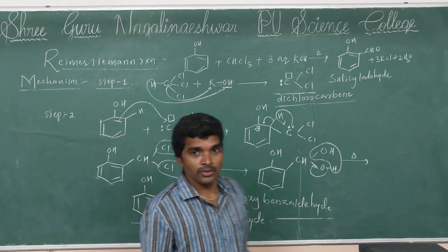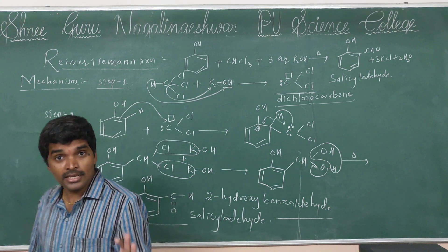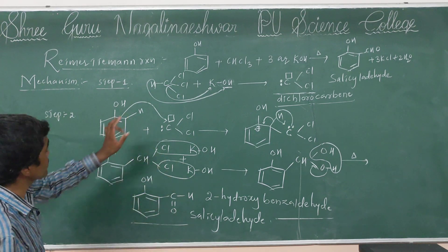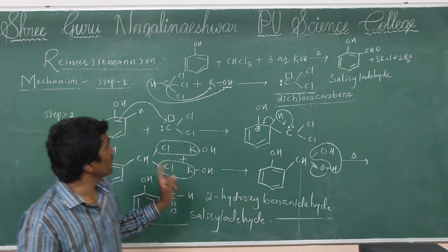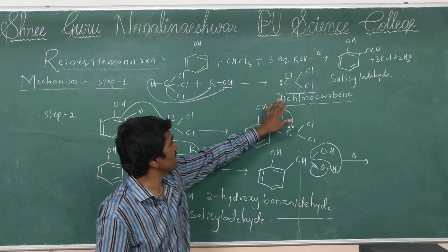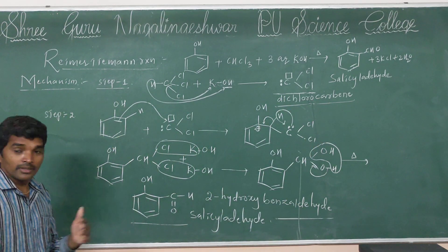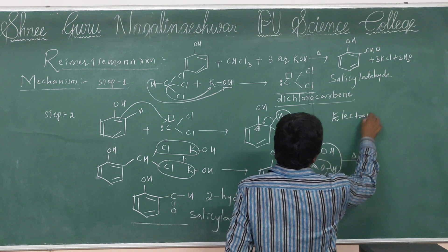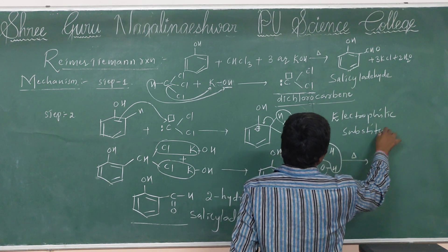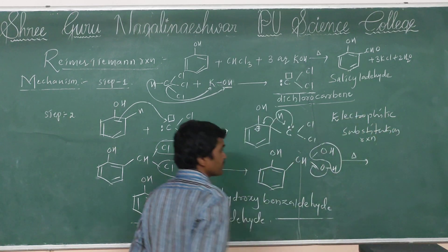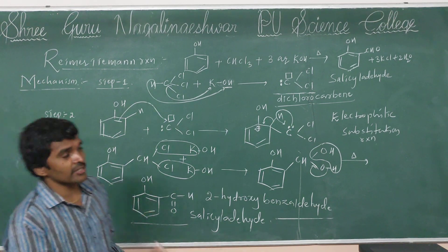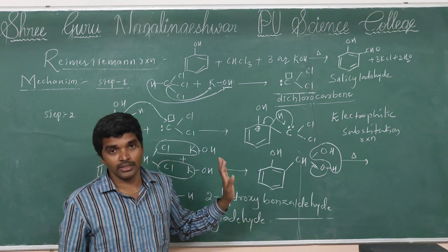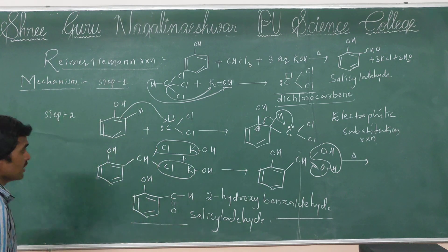This is the Reimer-Tiemann reaction. This reaction is the best example of an electrophilic substitution reaction. Two important points: first, in this reaction the electrophile is dichlorocarbene (CCl2); second, the Reimer-Tiemann reaction is an electrophilic substitution reaction. The product formed is salicylaldehyde, otherwise known as 2-hydroxybenzaldehyde. Remember these points. This is the information about the Reimer-Tiemann reaction.